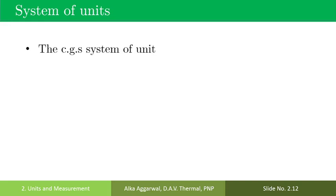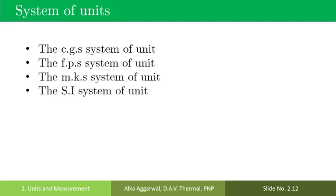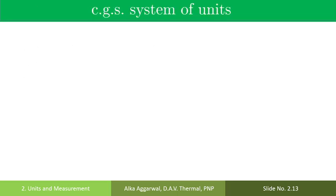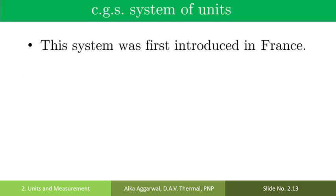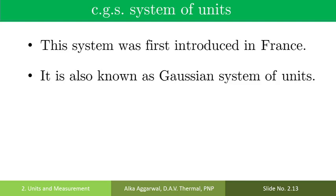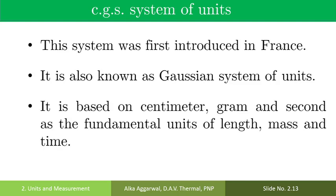Number one is the CGS system of units. The CGS system of units was first introduced in France. It is also known as the Gaussian system of units. It is based on centimeter, gram, and second as the fundamental units of length, mass, and time. The drawback of the CGS system is that many of the derived units in this system are inconveniently small.